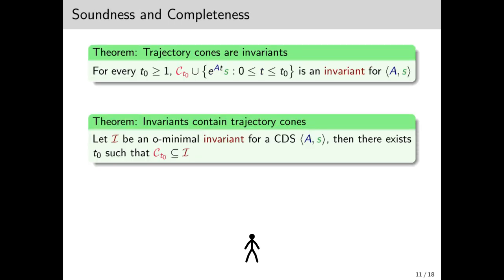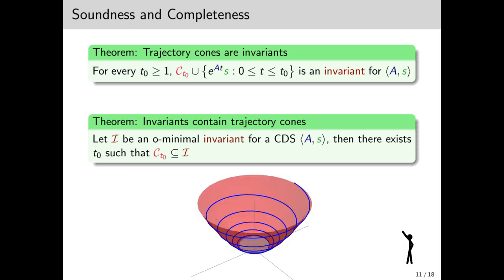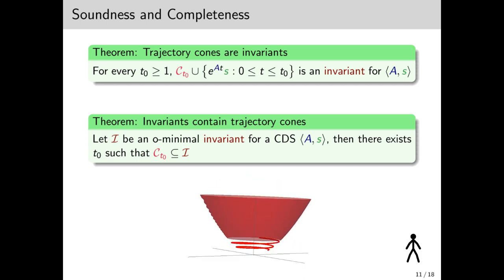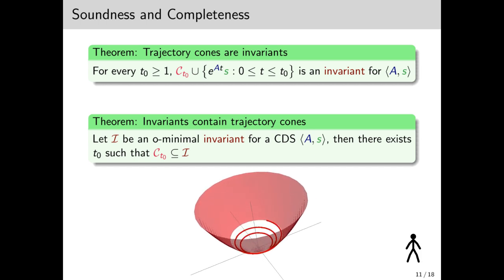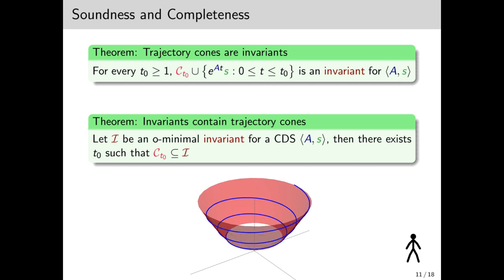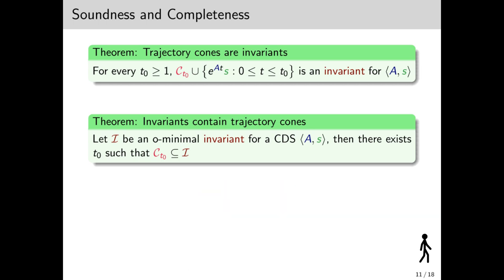We're now ready for the main characterization theorems. You can think of them as soundness and completeness results. For soundness, we show that for every T0, if we take CT0 and add to it the remaining tail, then this is an invariant for the CDS. This is actually pretty obvious, since this is kind of the reasoning behind the construction. The proof does require some effort, but not too much. For completeness, we show that every O-minimal invariant that contains the orbit must contain CT0 for some T0.